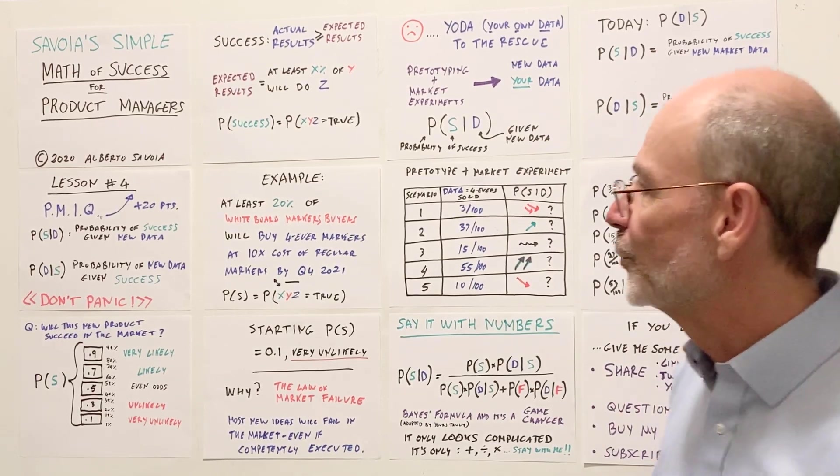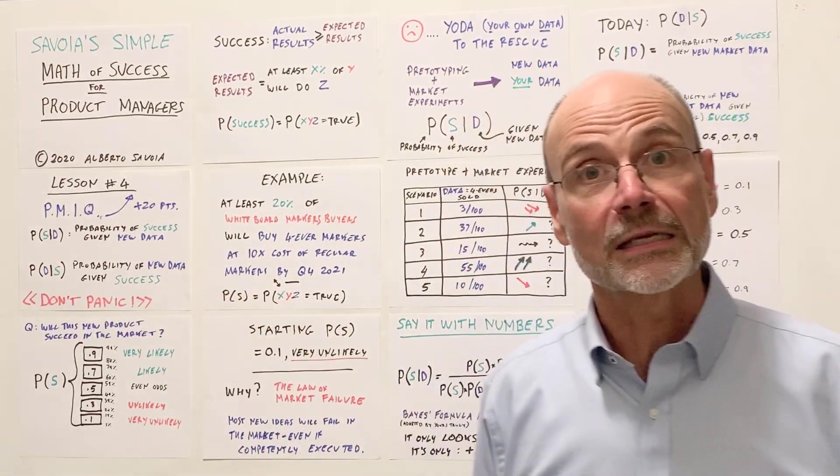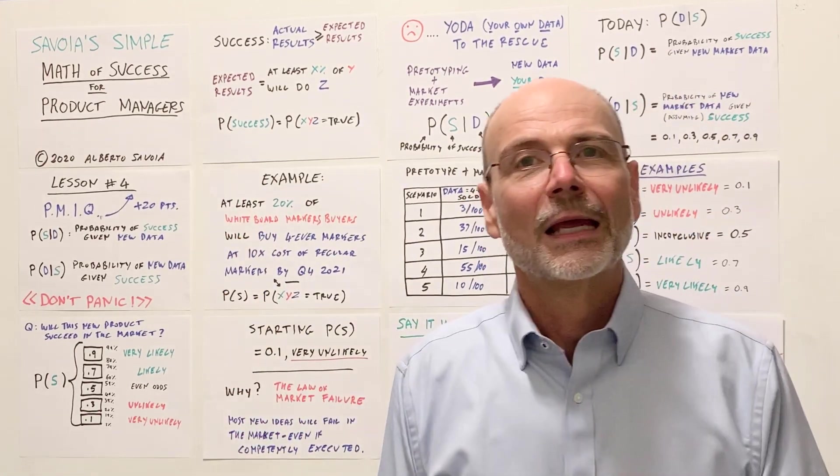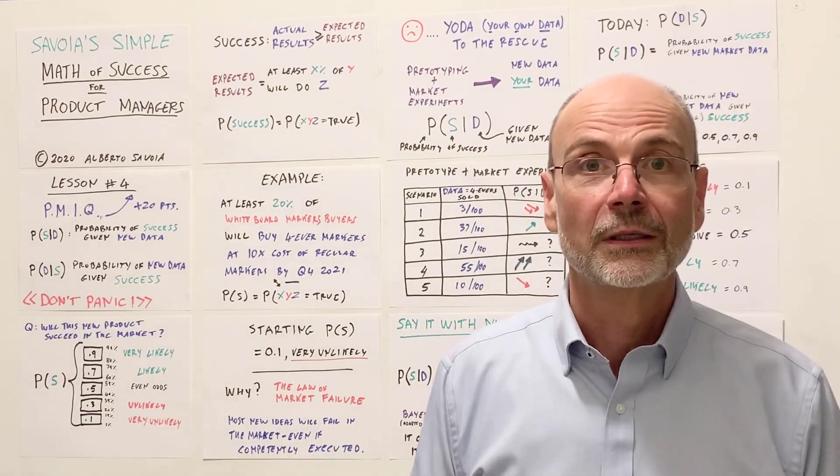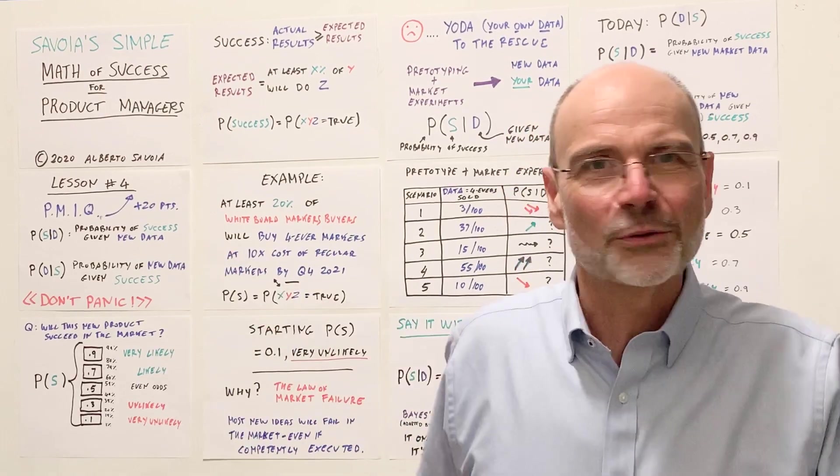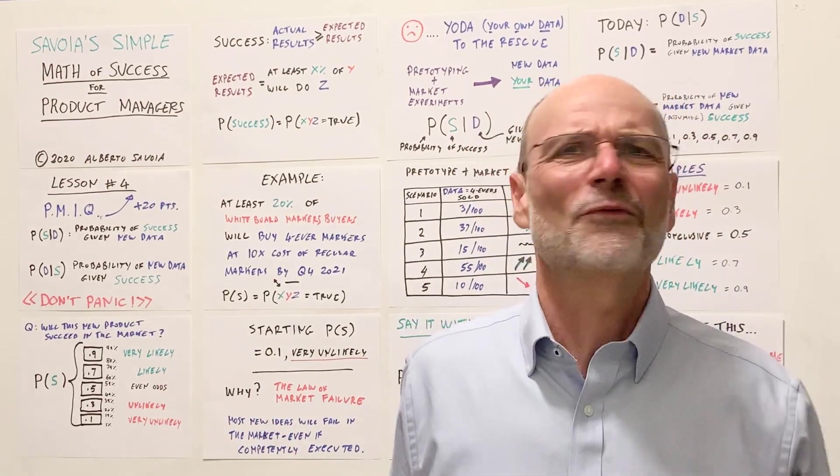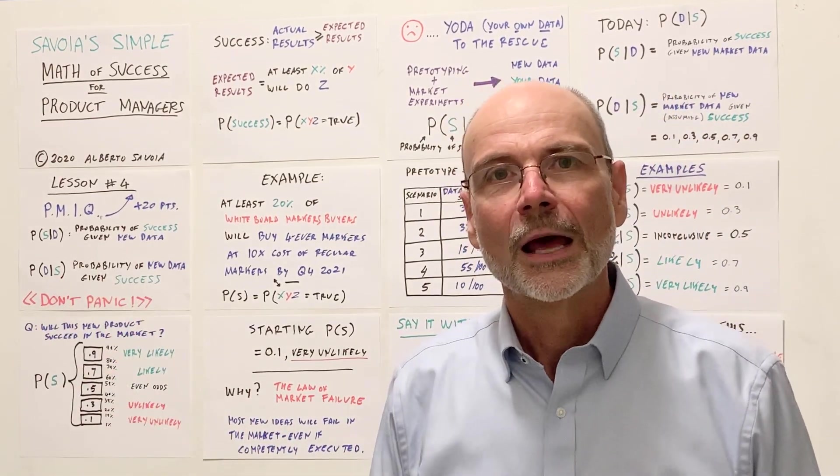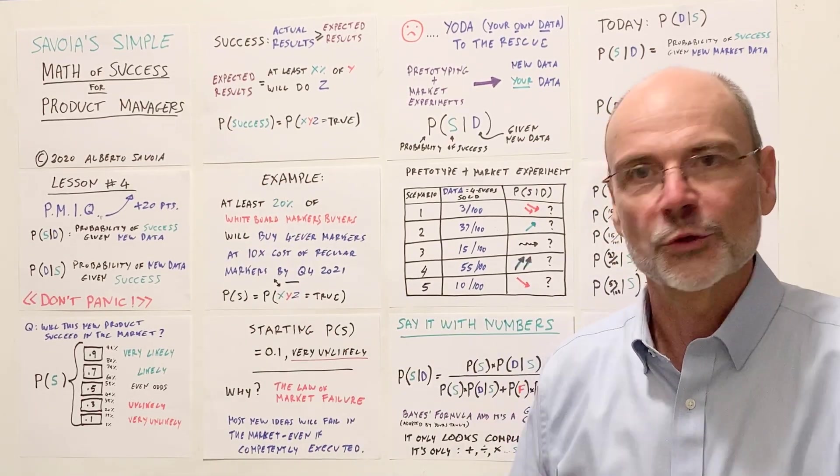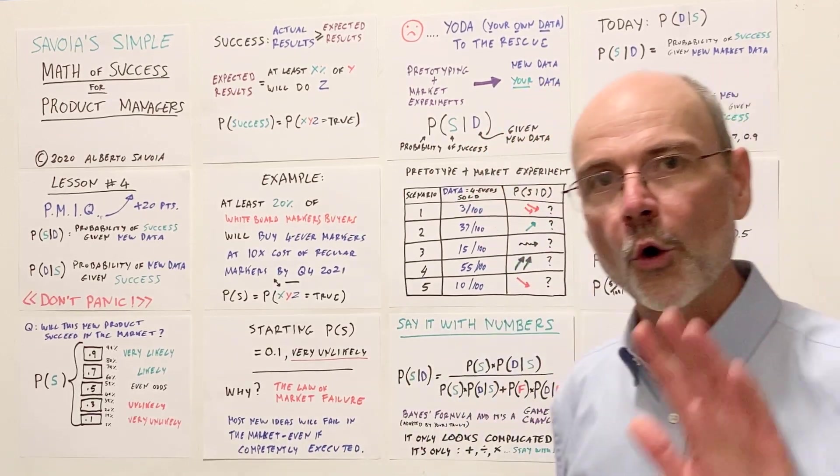So today in lesson four, what we're going to learn is this. We're going to learn the difference between probability of success given new data and probability of new data given success. Wait. This is confusing. What's the difference between these two? Well, yes, it is a little bit confusing. And you know what? That confusion is great. It's great because most people see this or think about this and they just tell me, oh, I don't want to deal with this. It's complicated. It's too mathy. It's too confusing. And they go away.